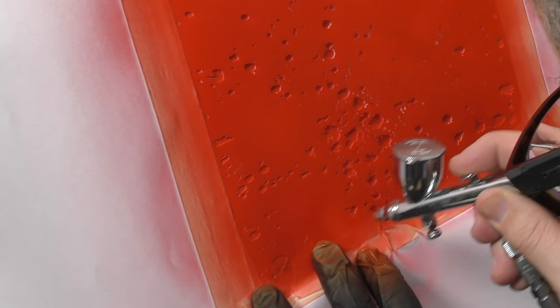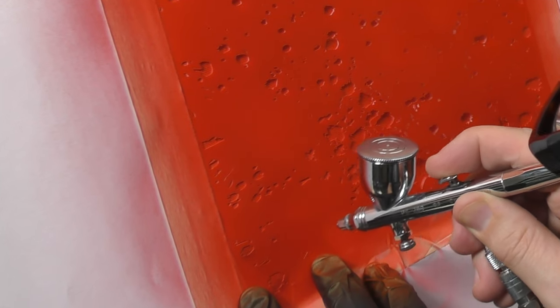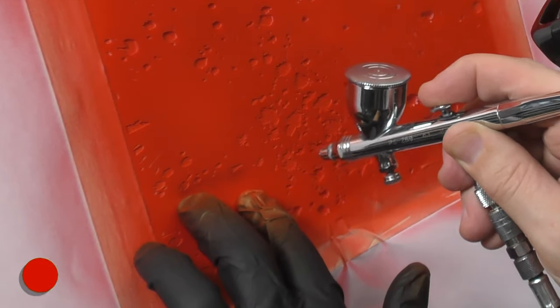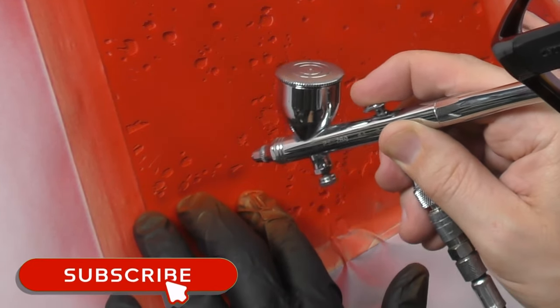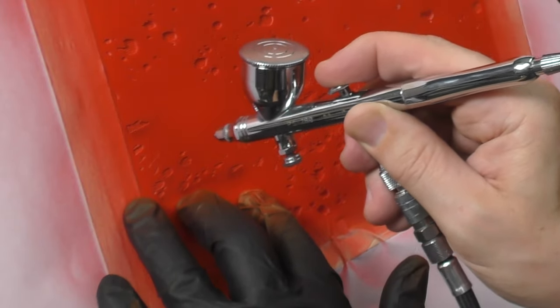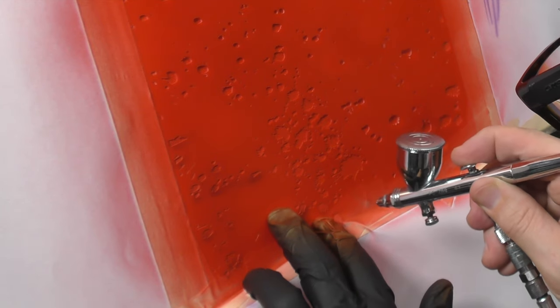You don't have to go too heavy. The violet's just going to blend nicely with the red. If you don't have violet you could also use blue given that majority of the paints are transparent and they're going to mix on the surface.